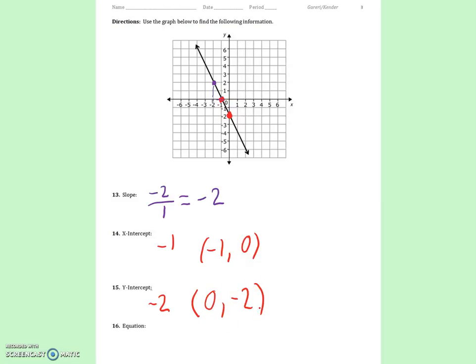Alright, so then we just use this information to write the equation. We know y equals mx plus b. Fill that in. Y equals negative 2x minus 2, because our y-intercept is negative 2. And you're done with that one.